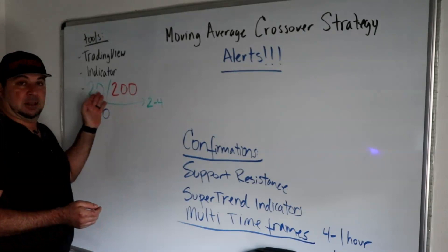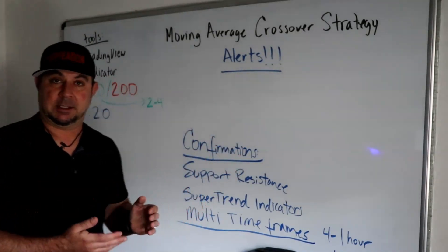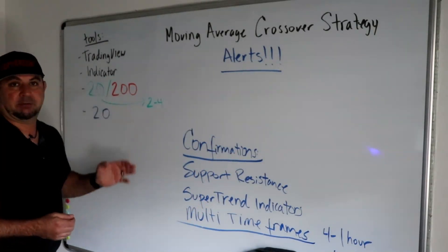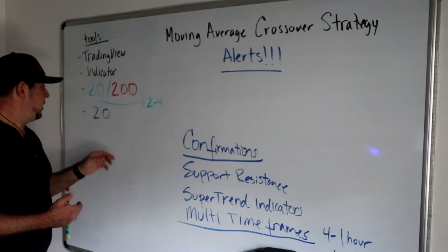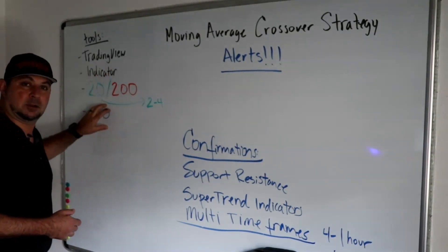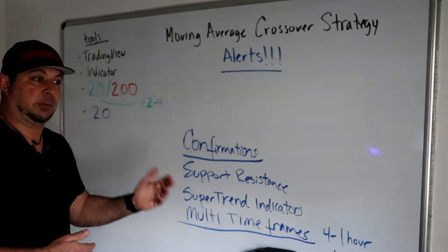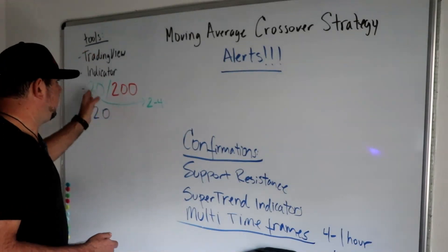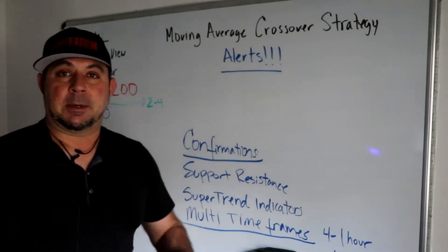We all know that all indicators are lagging. How can we make them more responsive and immediate? We make these adjustments using technology. In place of this 20, I'm going to add another 20 for visual purposes — for tracking your trade, for getting in on pullbacks if you miss the trade.